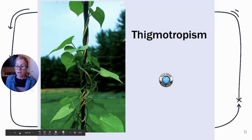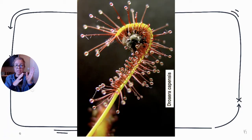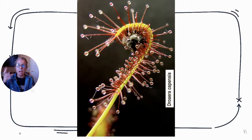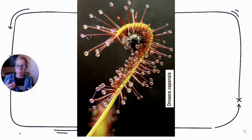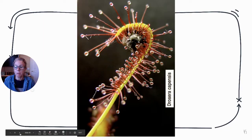There are other types of thigmotropism, like the sundew plant where when an insect touches the edge, the plant wraps around it. This is usually a plant that grows in nitrogen-deficient soil, so it gets its nitrogen from the insect. You see the same thing in a Venus flytrap with sensitive hairs that cause the plant to respond.